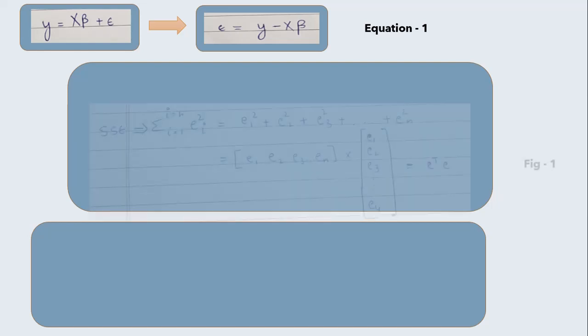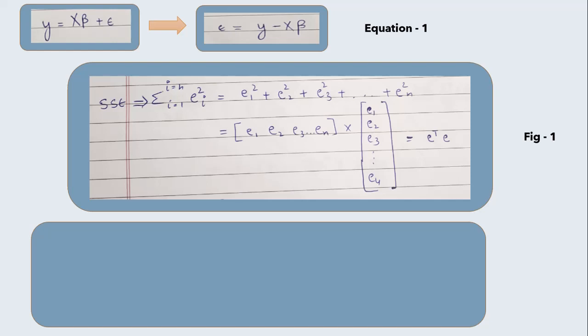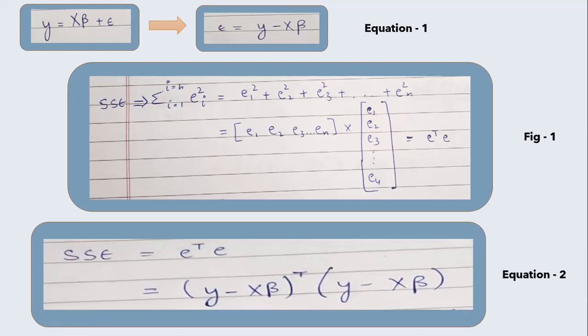In linear algebra terms, the least square parameter estimates beta are the vectors that minimize the error. Rearranging the terms, the error vector is expressed as e equals y minus x beta. We will minimize the sum of squared error same as we did for simple linear regression, but this time for the matrices as shown in the figure. Error is the function of parameter beta.